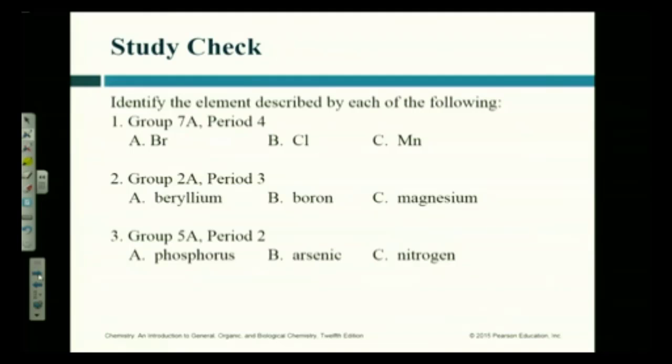All right, so Group 2A, Period three. Ready, set, vote. I think everybody has it. It's three, right? Oh, you had two? Magnesium? Group 2A. Look at 2A. That's beryllium, magnesium, and calcium. Right? Period number three. There's nothing in Period number one. So Period two and three means it's magnesium.